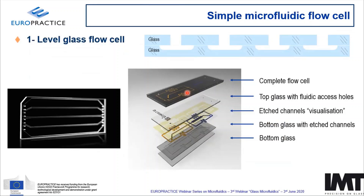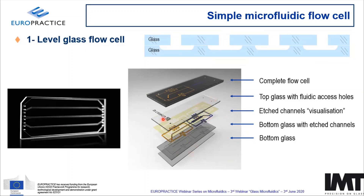Here is a very simple one-level glass flow cell, illustrated as a photograph and a cross-cut, where you basically have one glass wafer with etched channels, a second glass wafer with drilled holes, and you put them together to create a microfluidic component. Here is a blow-up with the individual steps — the glass has been etched, this is the channel network being generated, the top wafer with the access holes — and the complete flow cell at the end of the day.